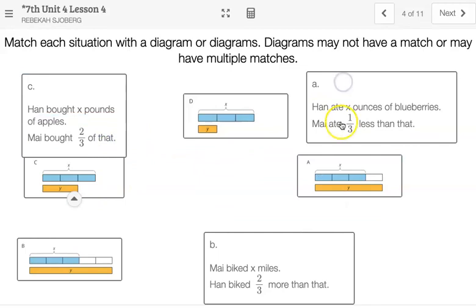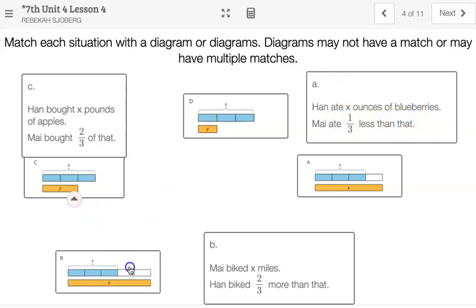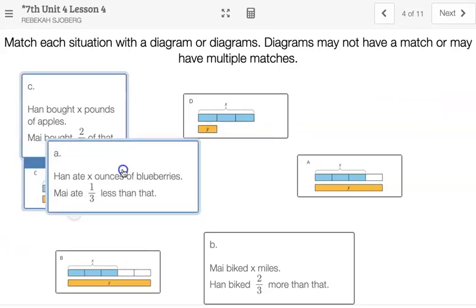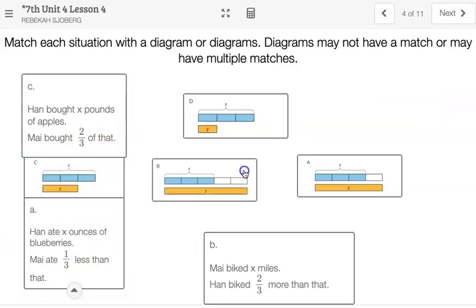If I look at this one, Han ate X ounces of blueberries and Mai ate 1 third less. If you have 1 third less, you start out with the full and then you're missing 1 third. So again, that one also matches this. 1 third less looks like it's 2 thirds of. So those also match.